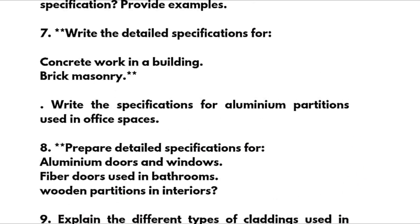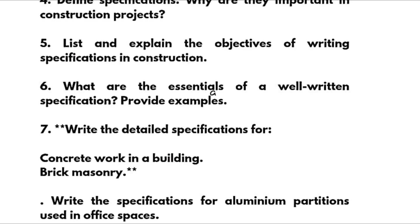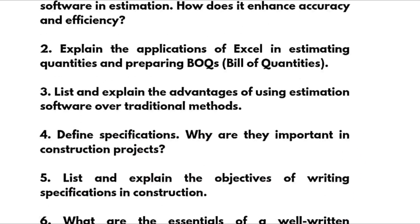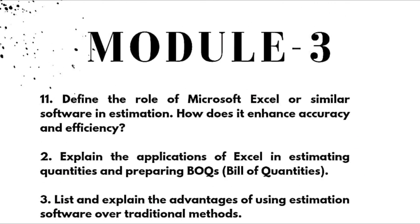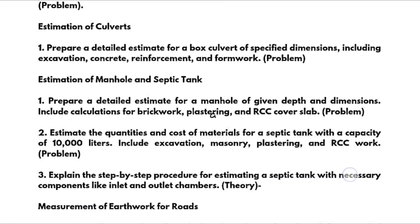So that covers Module 3. Make sure you go through these questions. If you want to pass 21CV71, concentrate fully on three modules and take some problems from Modules 1 and 2. If you want to score well, the first two modules — the problematic estimation part worth 20 marks each — can decide your score. Better to focus on the problematic part. Notes will be available in the description box.